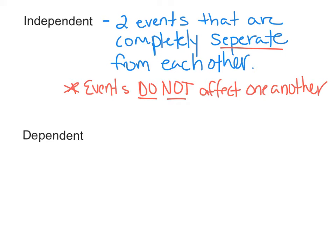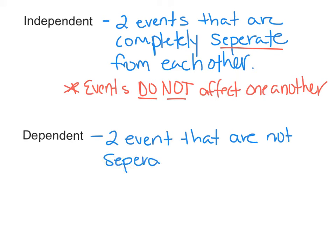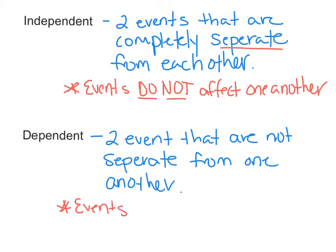When you're talking about dependent events, these are two events that are not separate from one another. An example would be if I draw a card from a deck of cards and then I draw a second card from that deck, but I do not replace the first. Since I didn't replace the first, now there are fewer cards to choose from, and that affects the probability of the second event. So the events do affect one another.